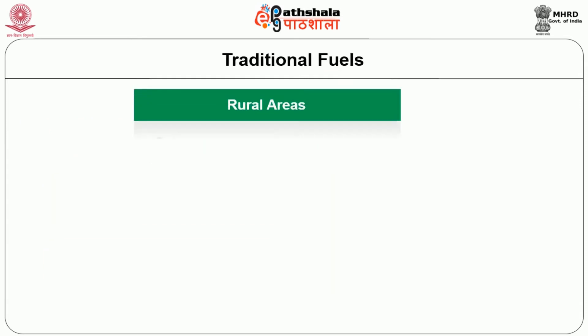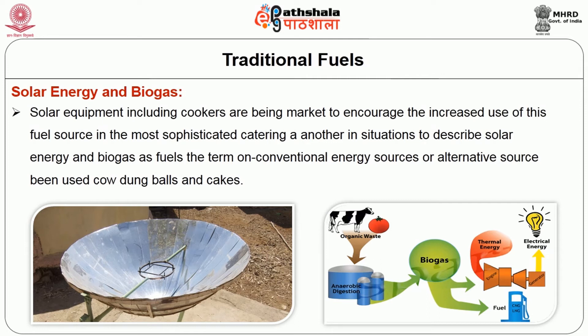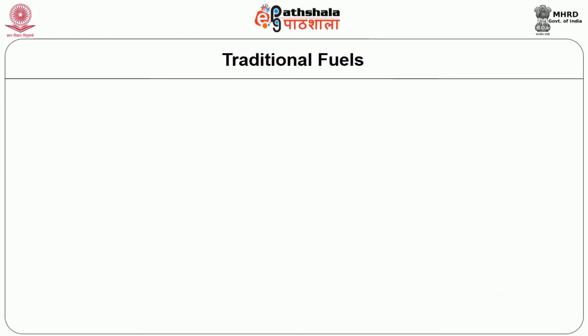Traditional fuels are used in rural areas even today, such as solar energy, coal, wood, and fuel balls made from coal dust, hay, and cow dung. Solar equipment including cookers are being marketed to encourage increased use of this fuel source. In sophisticated catering situations, the terms unconventional energy source or alternative source are used, with cow dung balls and cakes being utilized. Maximizing use of fuel resources requires the golden rule of switching on when needed and switching off to prevent wastage, to be followed to the letter.